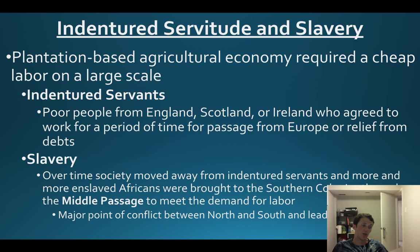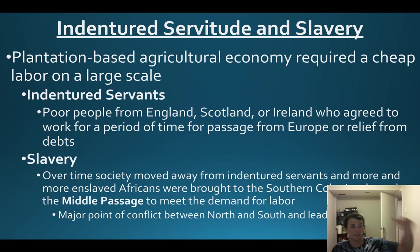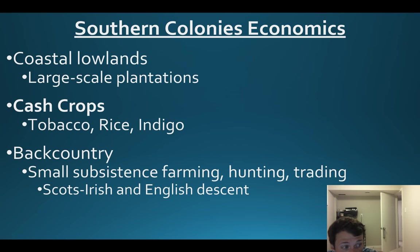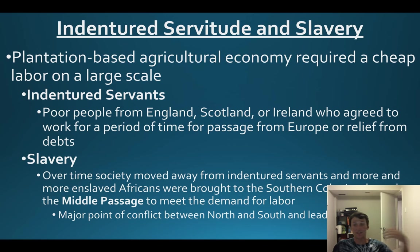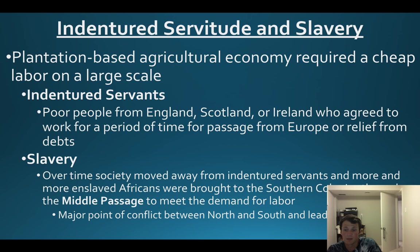Indentured servants had an often seven-year term to pay for passage and relieve debt in Europe to get over there. These Scots-Irish and English people were a lot of these indentured servants - when their time is up they head west to the back country. What happens eventually is they move away from indentured servants toward more enslaved Africans, since they don't need to pay them.